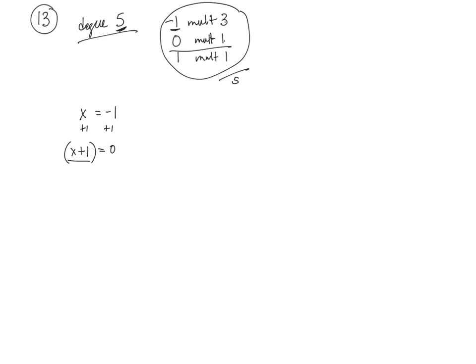So 0, multiplicity of 1, I could just write x equals 0. I don't need to move anything from one side to another, so that is a factor.